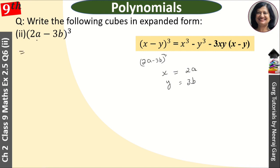Now we will apply the identity. 2a minus 3b whole cube: x cube means 2a whole cube, minus y cube, y is 3b, so 3b whole cube.